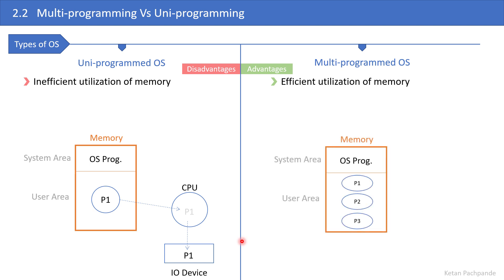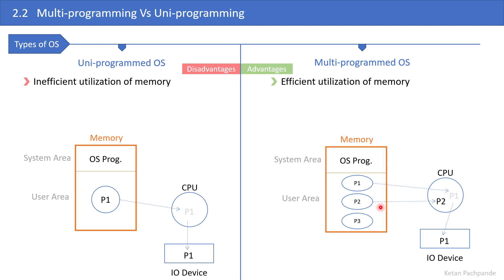On the other hand, in the multiprogrammed environment, process P1 goes for execution first and after some time it goes for IO. Now while it does IO, the CPU becomes idle. But since P2 and P3 are already loaded in memory, I can allocate the CPU to process P2. So at this moment, P2 is using the CPU and P1 is using the IO device — making the best use of both the CPU and IO hardware.